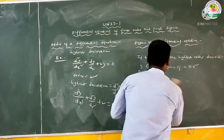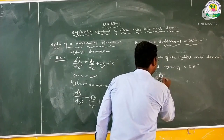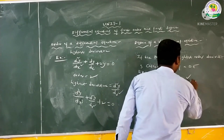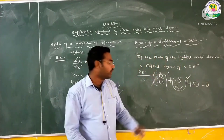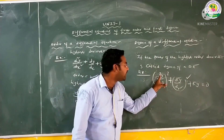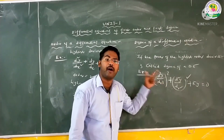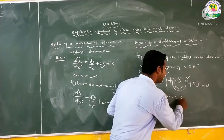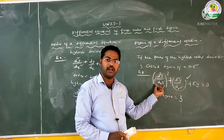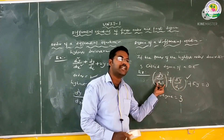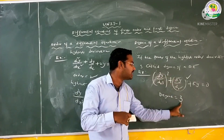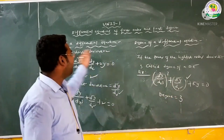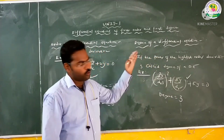See one more example: (d³y/dx³)³ + (d²y/dx²)² + 5y = 0. In this equation the highest derivative is d³y/dx³, which involves three-times differentiation. The power of that highest derivative is 3. Therefore the degree of this differential equation is equal to 3.